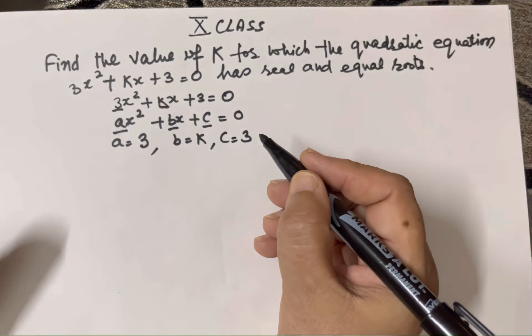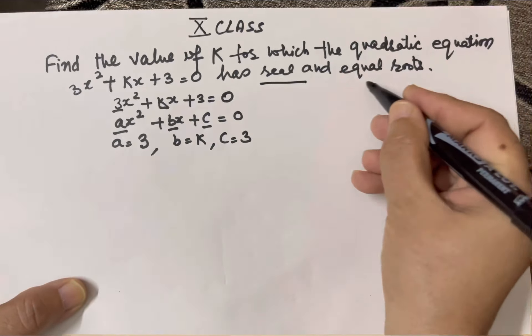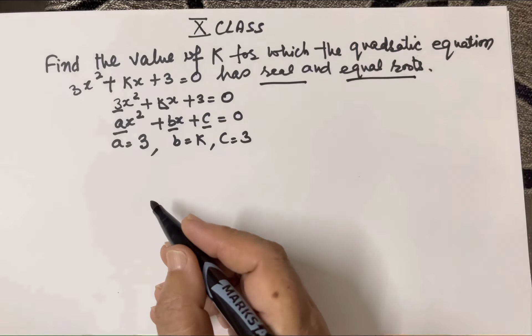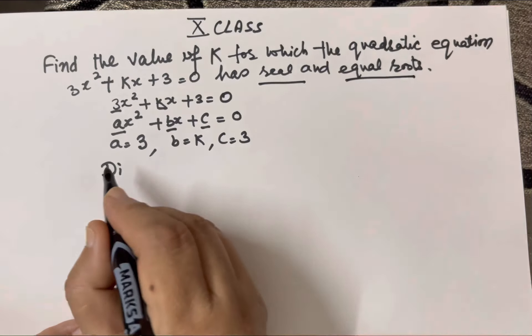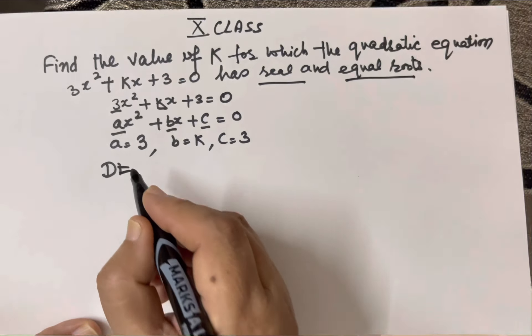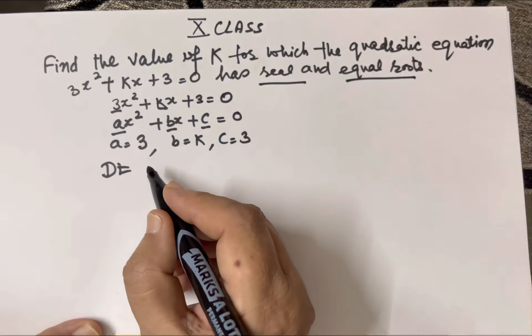Now, since the roots are real and equal, we will find the discriminant. We can write D, D as discriminant.